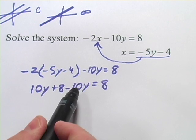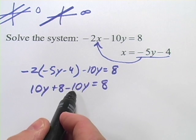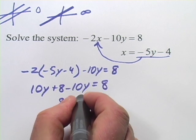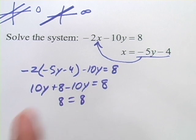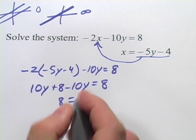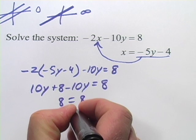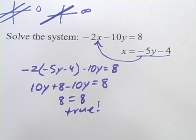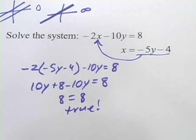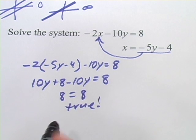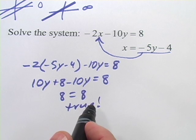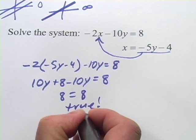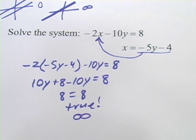And you can see when we combine our like terms — the 10y and the minus 10y — that equals zero. So we just get 8 equals 8. Another funny-looking result. But in this case, when we ask ourselves is the statement true, it absolutely is — 8 does equal 8. And what that means is that the two lines are absolutely the same. They're right on top of each other, and the number of solutions here is an infinite number of solutions.